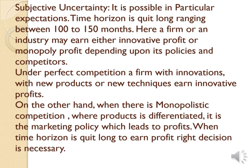The second important thing is subjective uncertainty. Subjective uncertainty is more pronounced in particular expectations. The time horizon is quite long, ranging between 100 to 150 months — that is more than three to four years. A firm or industry may earn either innovative profit or monopoly profit depending upon its policies and competencies. This is the most important thing to remember — if an industry properly anticipates what is going to happen, it's a long-term process.